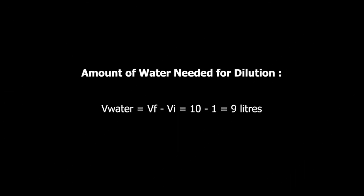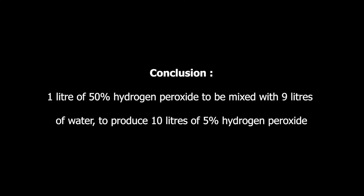Remember that diluting means mixing a concentrated substance with water to lower the concentration. We need to find the specific amount of water to use. Volume of water equals VF minus VI, which is final volume minus initial volume: 10 liters minus 1 liter equals 9 liters. So the amount of water to be used is 9 liters.